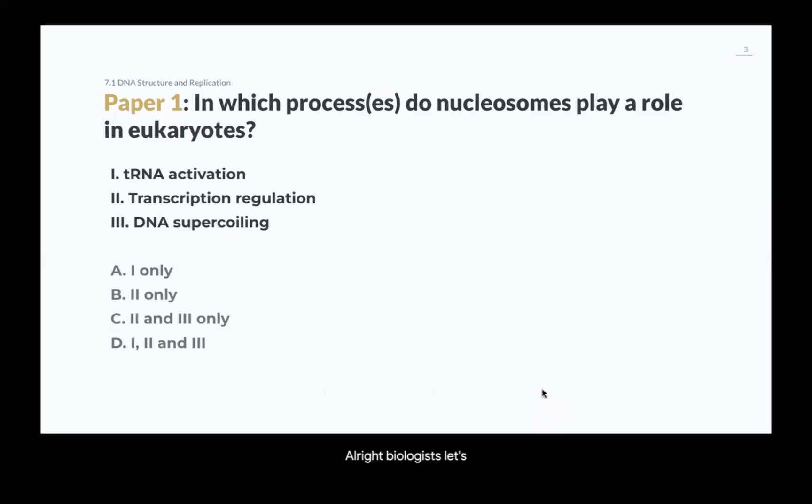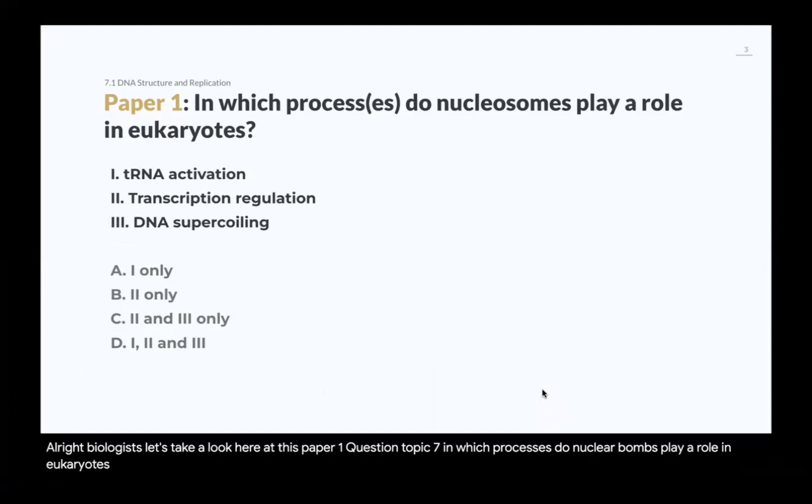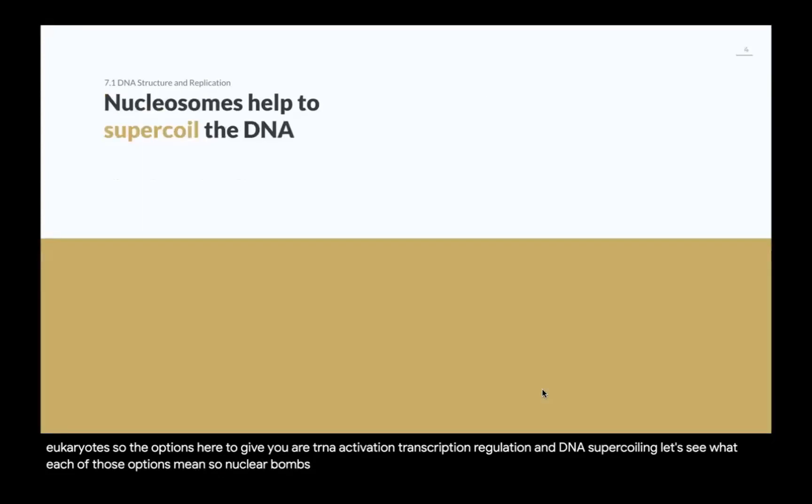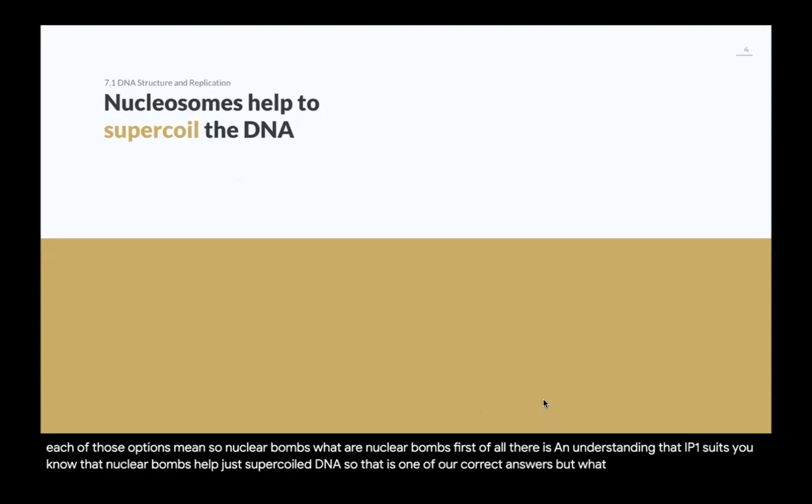Alright biologists, let's take a look here at this paper one question, topic seven. In which processes do nucleosomes play a role in eukaryotes? The options here are tRNA activation, transcription regulation, and DNA supercoiling. Let's see what each of those options mean. So nucleosomes - what are nucleosomes? First of all, there is an understanding that IB wants you to know that nucleosomes help to supercoil the DNA. So that is one of our correct answers. But what are nucleosomes?